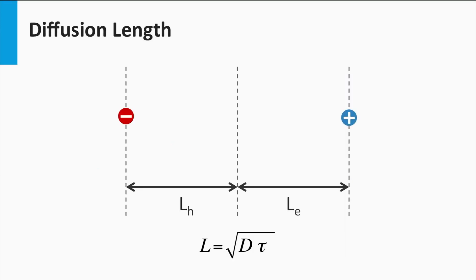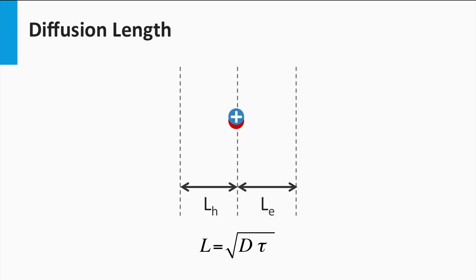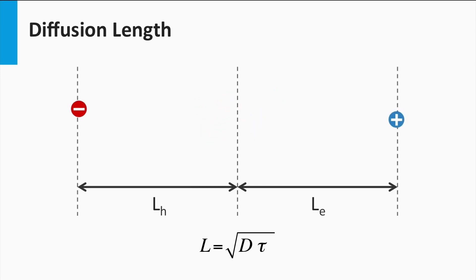Loss mechanisms like recombination determine the lifetime of the charge carriers. If the recombination rate is high, the lifetime of charge carriers is low. The diffusion length L is the average distance the excited charge carriers can travel, and is determined by the lifetime of the charge carriers — if the recombination rate is high, the diffusion length will be shorter; when the recombination rate is low, the diffusion length will be longer. The diffusion length and lifetime are related by a relatively simple equation: L equals the square root of the product of D and τ, where D is the diffusion coefficient and τ is the lifetime.